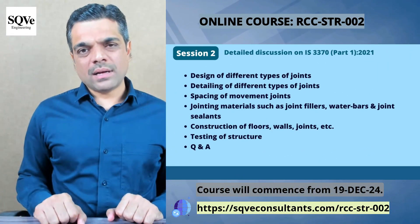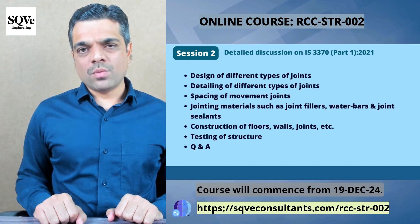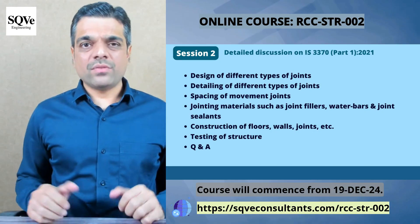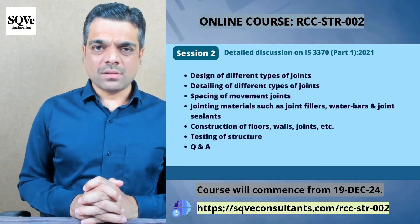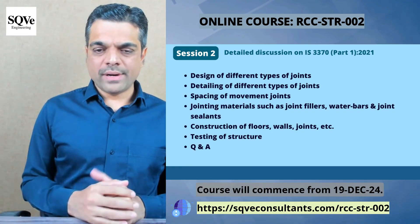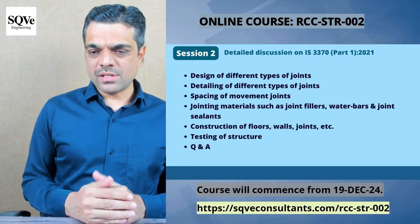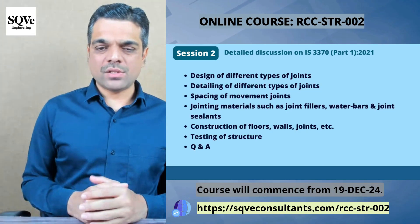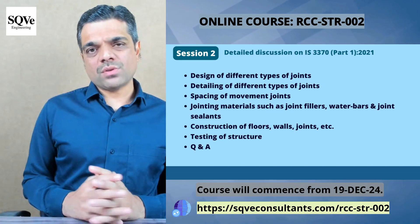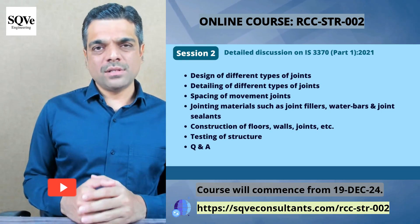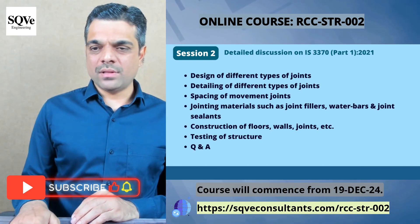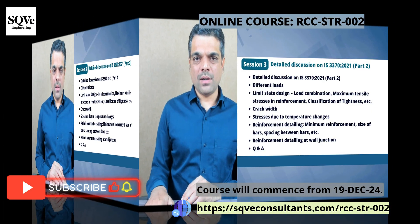Continuing with IS 3370 Part 1, the next session will cover design and detailing of different types of joints, spacing of movement joints, and jointing materials such as joint fillers, water bars, and joint sealants. We will also discuss important points for construction of floor, walls, and joints, as well as testing of structures in line with IS 3370 Part 1.